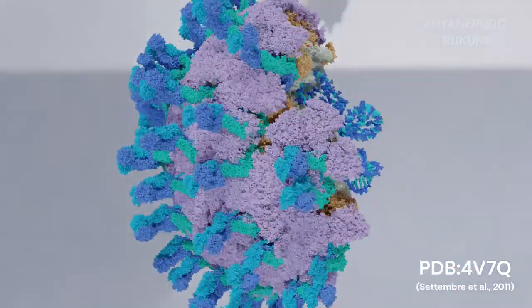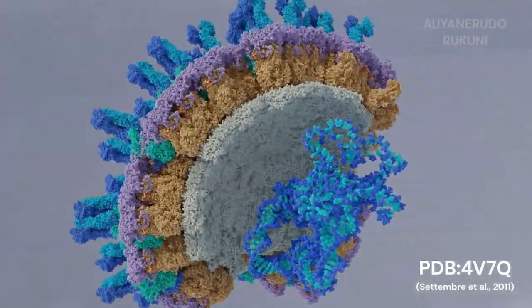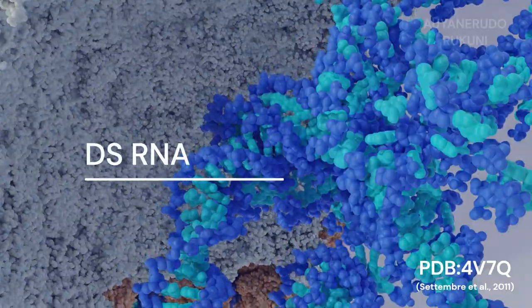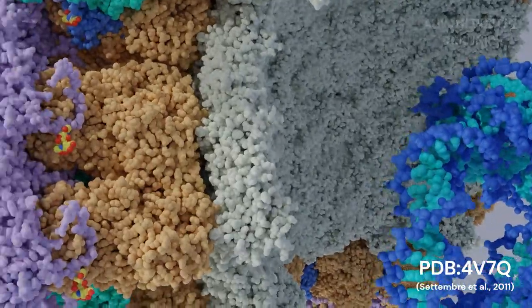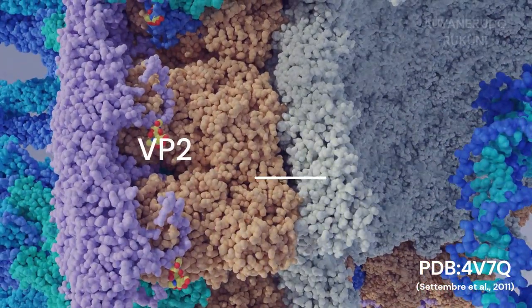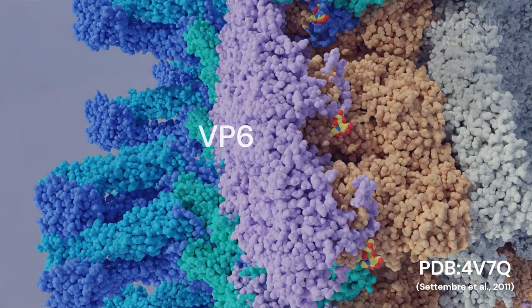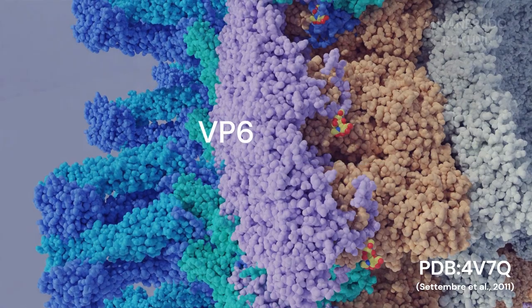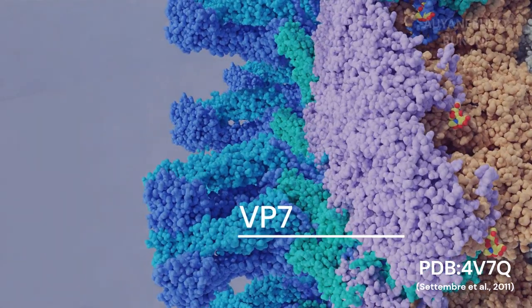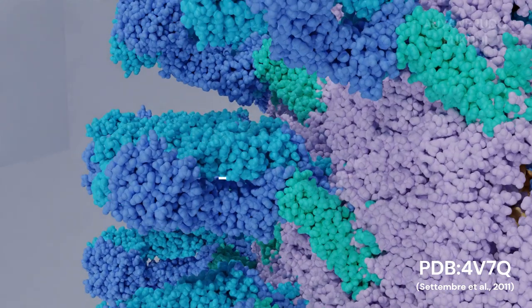Rotavirus is an icosahedral particle composed of three concentric layers surrounding the double-stranded RNA. The core layer, VP2, provides a scaffold for the virus. VP6 forms a honeycomb structure that stabilizes the fragile core, and VP7 forms a continuous perforated outer shell.